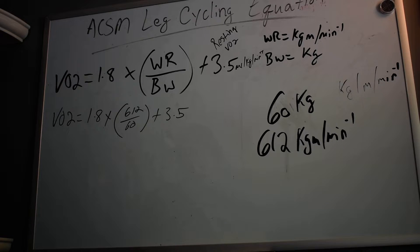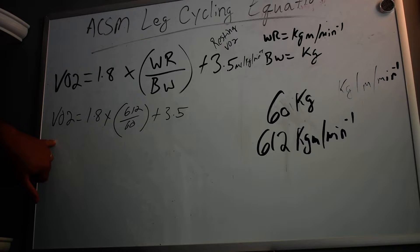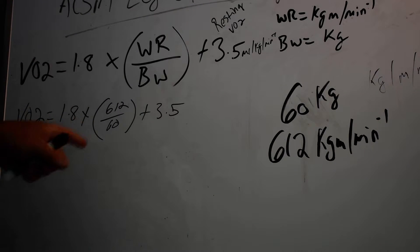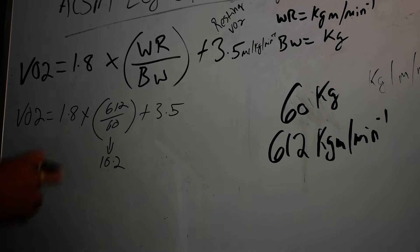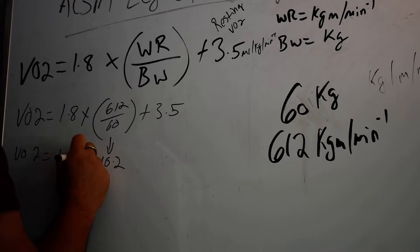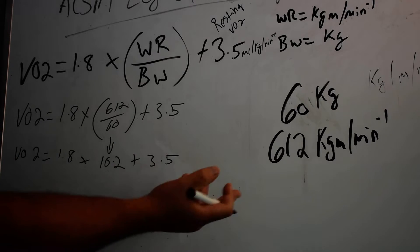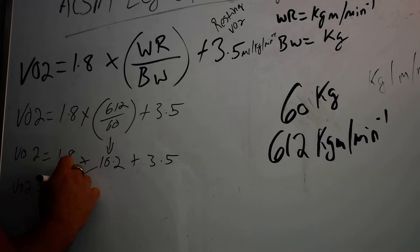Now with those known variables, we can go right ahead and do the math in steps. The very first step is 612 divided by 60, which comes out to 10.2. I'm going to rewrite the equation again — yes, it's tedious, but it keeps everything organized, and this is how I was taught to do math. Now it's just order of operations: 1.8 times 10.2.